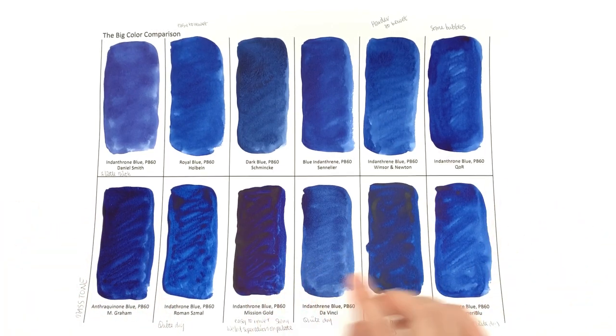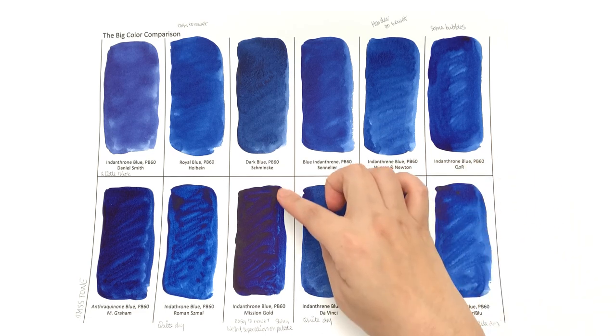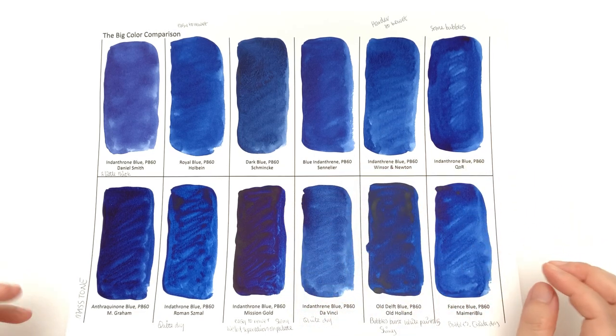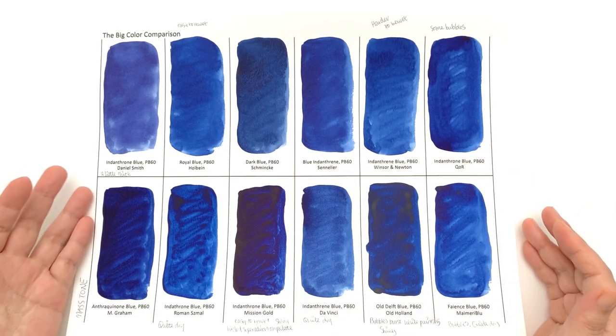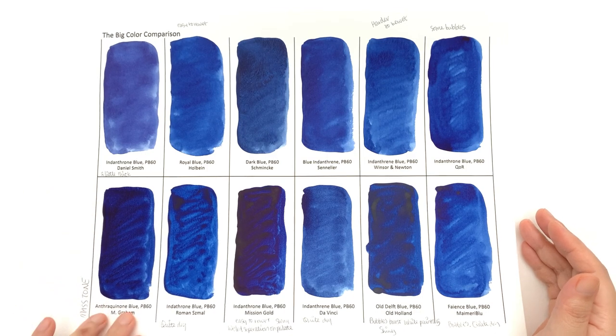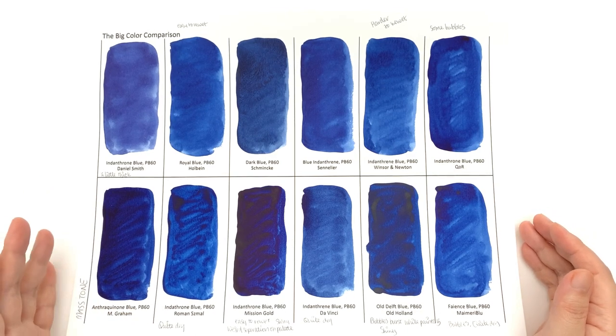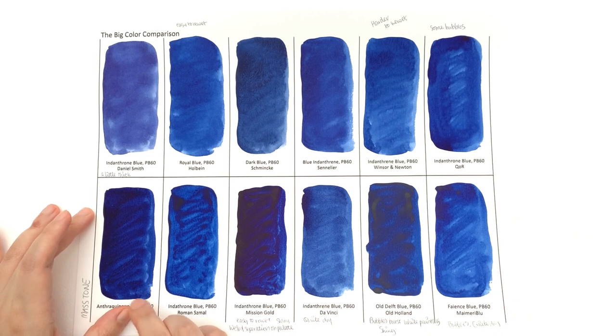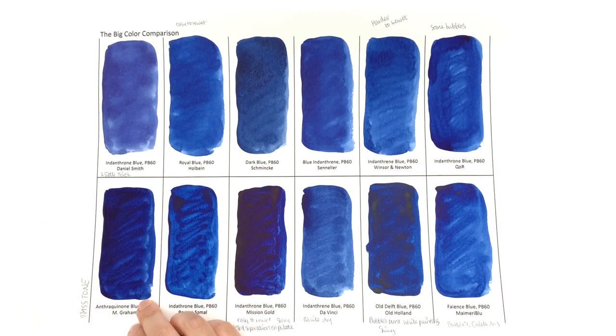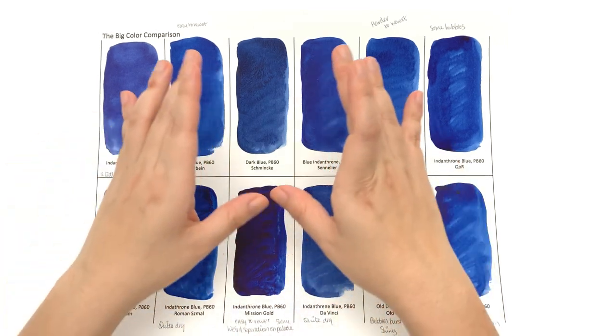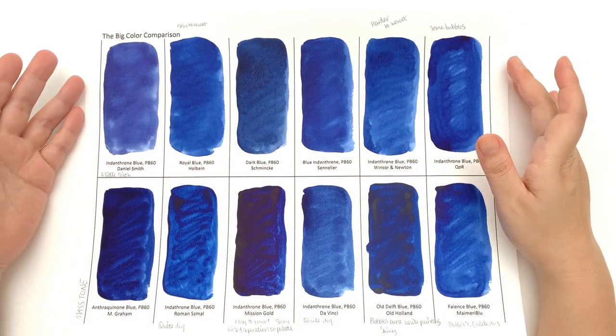Whereas the Mission Gold one and Old Holland one, it's all over the swatch, which is not ideal. Another one that's quite streaky is the M. Graham one, but you might just fall in love with this color, which I will totally understand, and at least this one doesn't suffer from shininess.